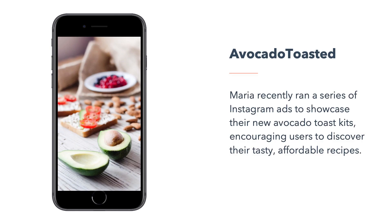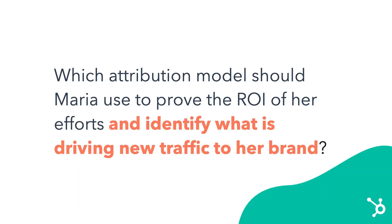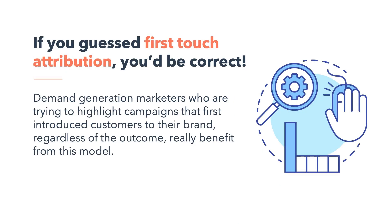To make this concrete, let's review some examples. Maria runs the paid search and social channels at her company, Avocado Toasted. She recently ran a series of Instagram ads to showcase their new Avocado Toast Kits, encouraging users to discover their tasty, affordable recipes. Which attribution model should Maria use to prove the ROI of her efforts and identify what is bringing new traffic to her brand? If you guessed first-touch attribution, you're correct. Demand generation marketers looking to highlight campaigns that first introduced customers to their brand, regardless of the outcome, really benefit from this model.